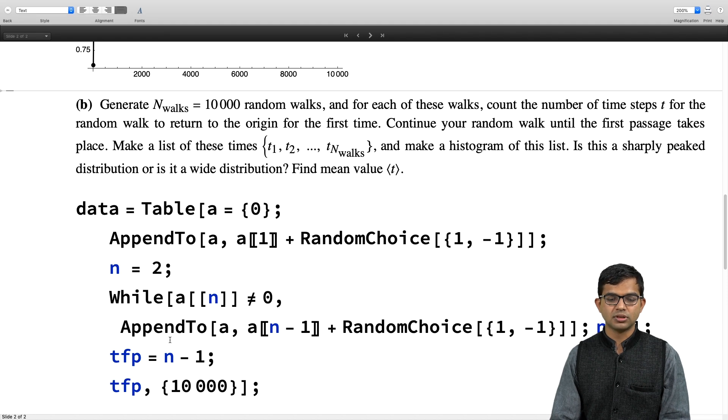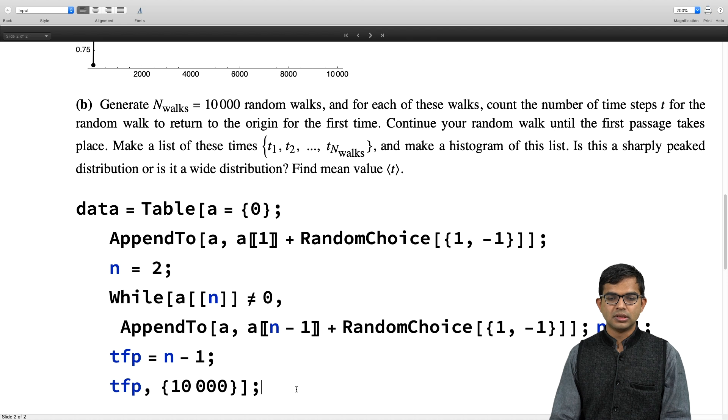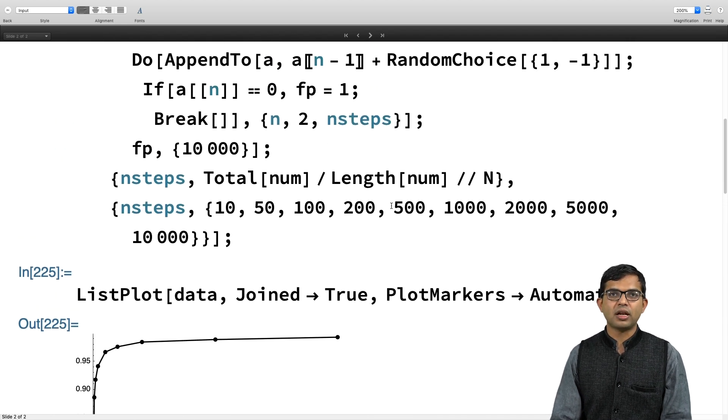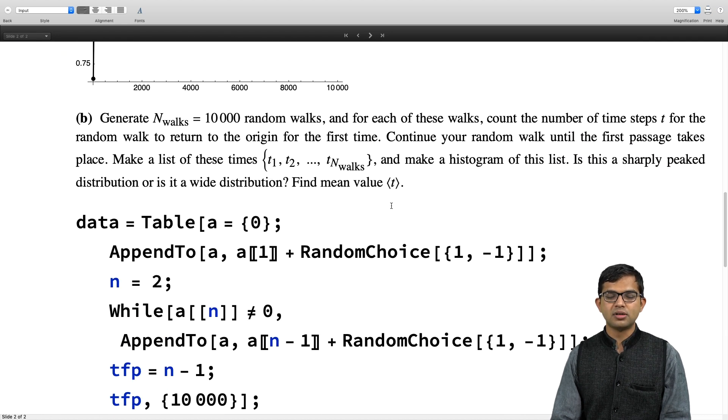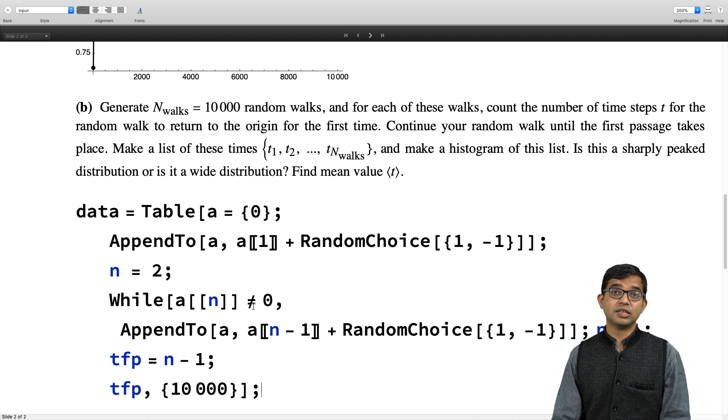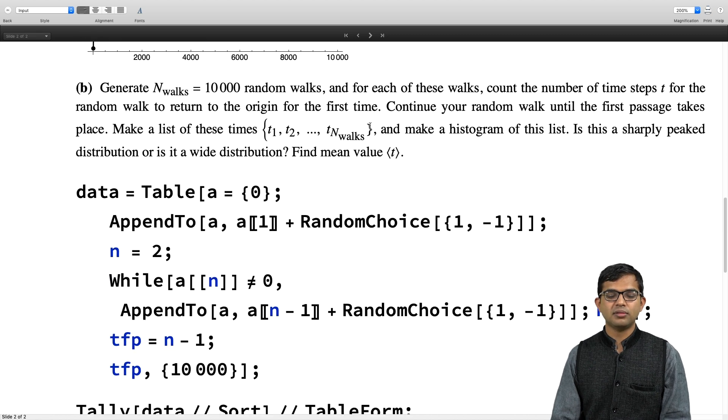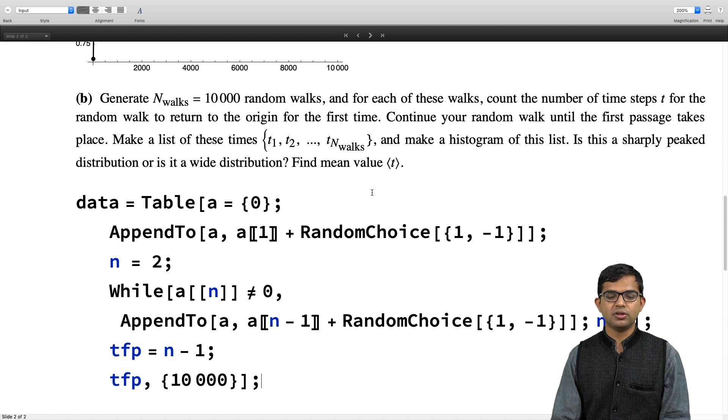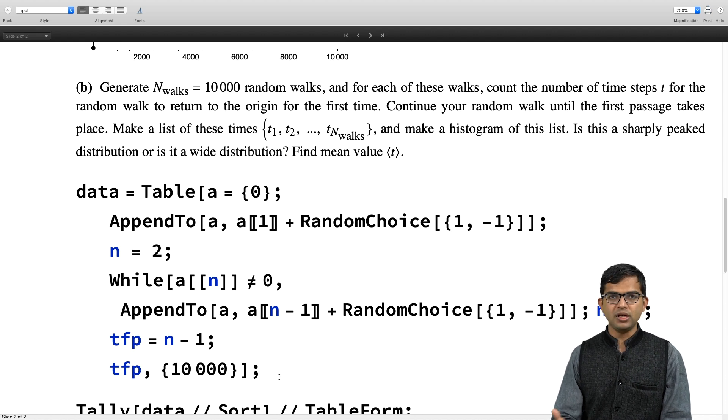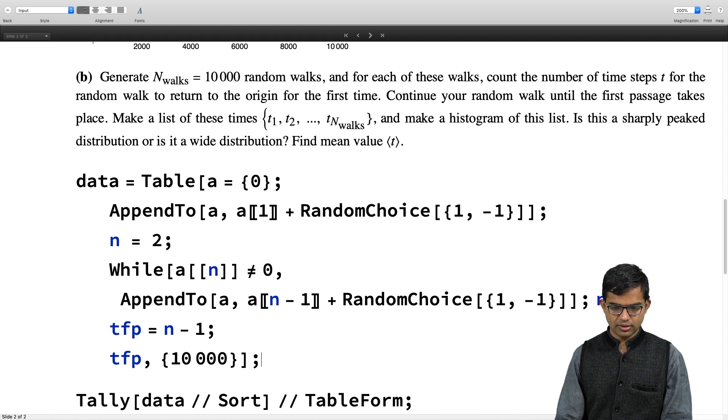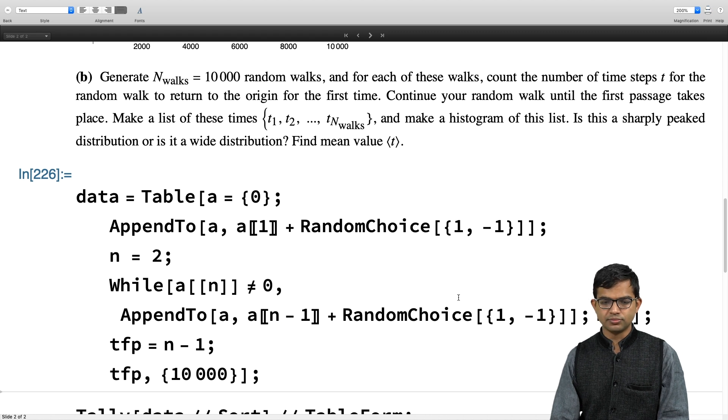If TFP happens, I will keep a record of this first passage time and then I will do this 10,000 times. I am generating 10,000 random walks and I am keeping track. My part A gives me the confidence that my simulation will actually stop. My experiments with part A actually give me the confidence that I can do this. Eventually you are going to get this TFP. So let me go ahead and run this and show you that indeed all of these random walks will actually come back.